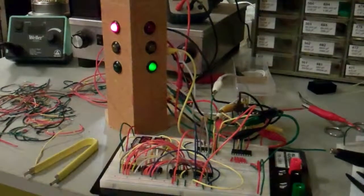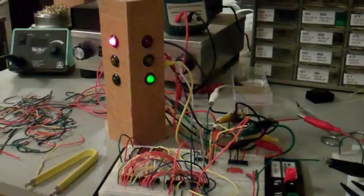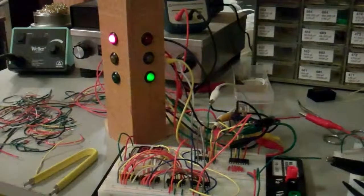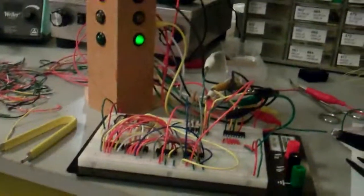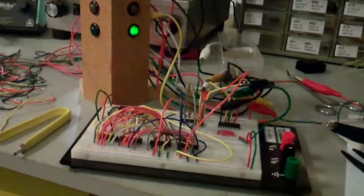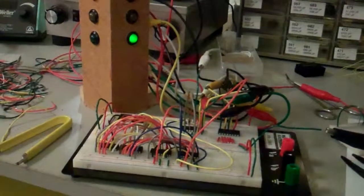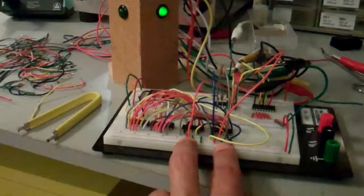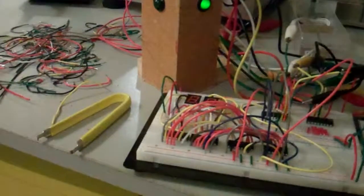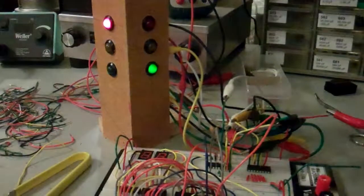This circuit actually has, I count, six chips, but three of them are actually just resistor packs. So if you took the resistor packs out, there are actually only three chips in here: the microprocessor and then down here are two 4511 decoders for the seven segment display.